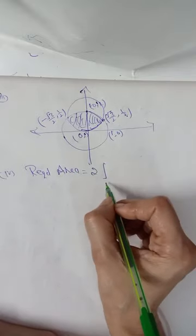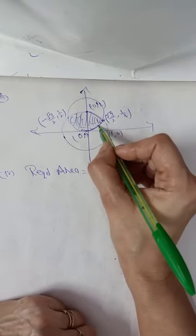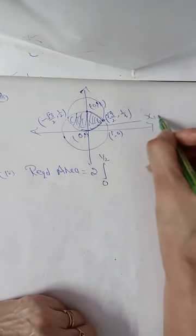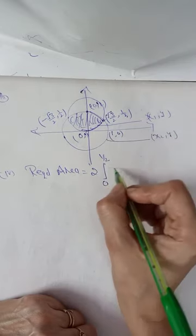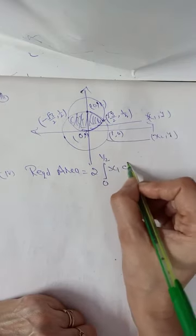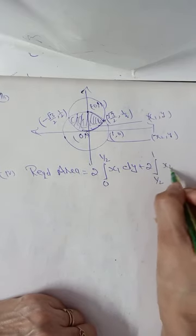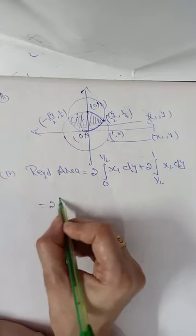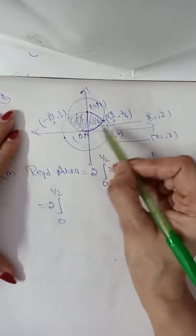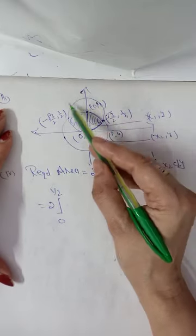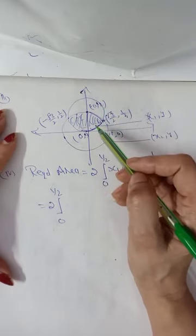We have twice the integral from 0 to 1/2, where x₁ corresponds to the second circle, plus twice the integral from 1/2 to 1, where x₂ corresponds to the first circle. From the second circle we obtain the value of x.